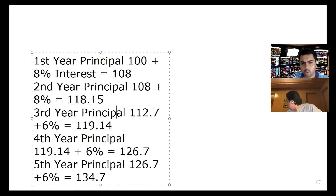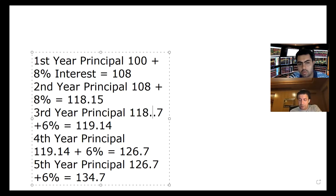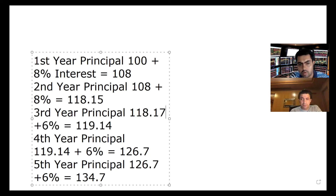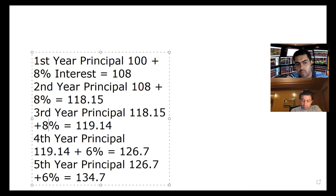Third year. What is the base? It's 118.15. Plus 8% is how much? That comes to 128.42.